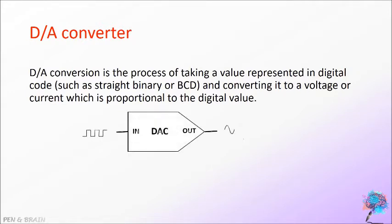Symbolically, we can represent D by A converter like this where the square wave shows the digital input and the sine wave shows the analog output. This analog output will be always proportional to the digital input.